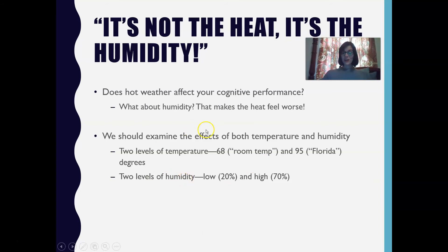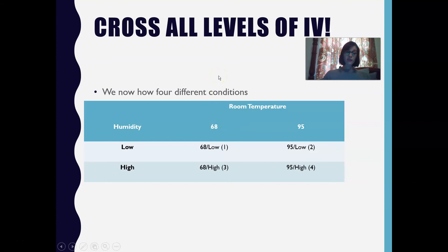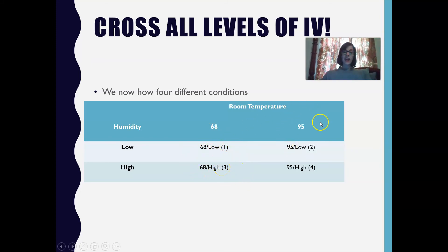Humidity always makes heat feel worse, so we have these two independent variables, each with two levels. When we cross all levels of our independent variables, we get four different conditions: room temperature with low humidity, room temperature with high humidity, 95 degrees high temperature with low humidity, and high temperature with high humidity.